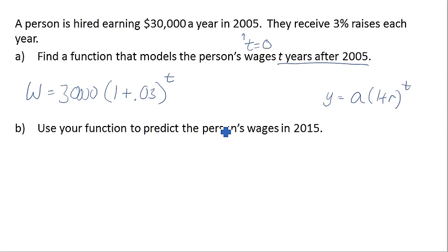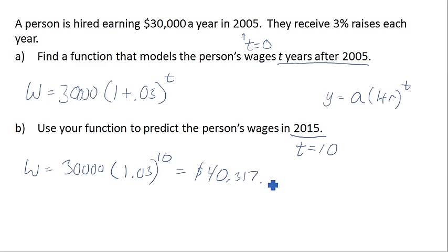So now we can use this function to predict the person's wages in 2015. First thing we need to do is identify what value of t this is. Remember, t is years after 2005, so how many years after 2005 is this? This is 10 years after 2005. So we can go ahead and use our equation now. 30,000 times 1.03, I went ahead and added those, to the 10th power, and I pull out my calculator, and I came up with $40,317.49 after 10 years.